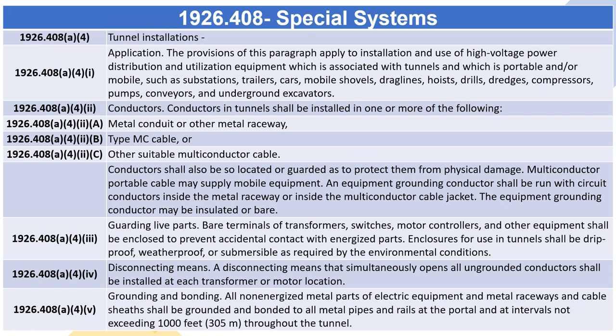1926.408(A)(4) — Tunnel Installations. 1926.408(A)(4)(i) — Application. The provisions of this paragraph apply to installation and use of high-voltage power distribution and utilization equipment which is associated with tunnels and which is portable and/or mobile, such as substations, trailers, cars, mobile shovels, drag lines, hoists, drills, dredges, compressors, pumps, conveyors, and underground excavators.